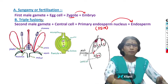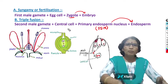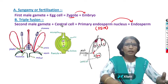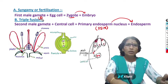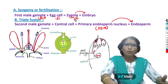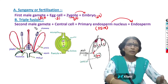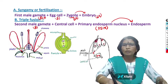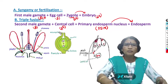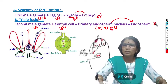This second fusion is called triple fusion — because one male gamete (haploid, X) fuses with the central cell containing two polar nuclei (X + X = 2X), making a total of three nuclei fusing together. So the primary endosperm nucleus is triploid (3X) and the endosperm formed from it is also triploid. The zygote and embryo are diploid (2X), since haploid male gamete (X) fuses with haploid egg cell (X).